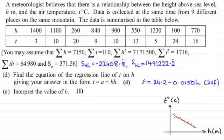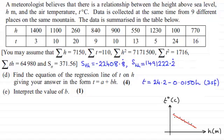Quite often you get questions like this to interpret the value of a coefficient, and normally b would be the gradient — but just writing 'the gradient' is never appropriate for this kind of thing. We need to associate a meaning with this.